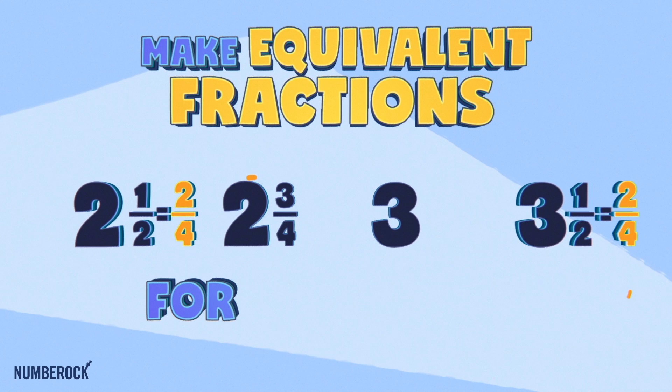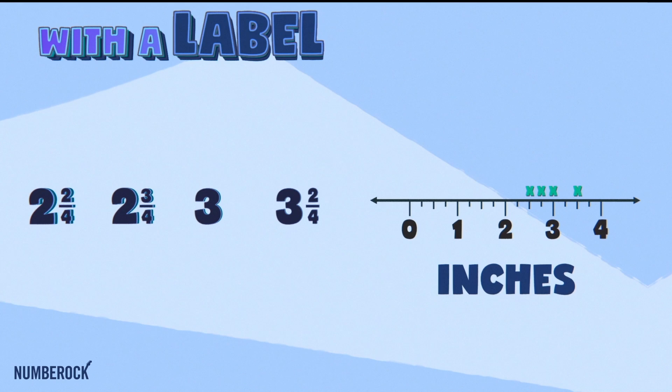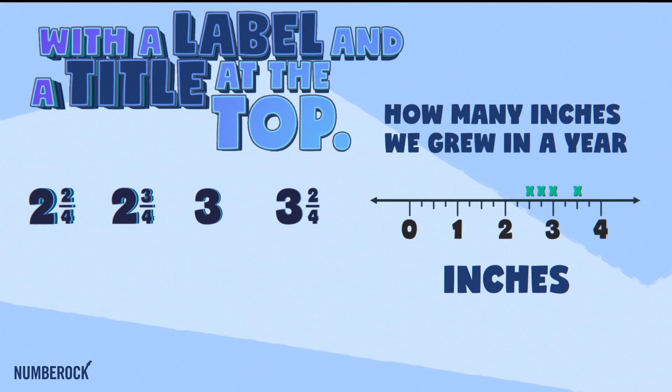First, find a common denominator. Make equivalent fractions for all the data. You can block what you got on the nine clock, with a label and the title at the top.